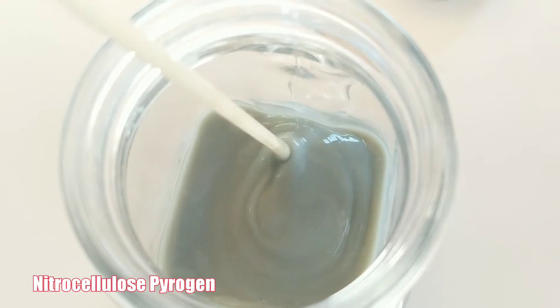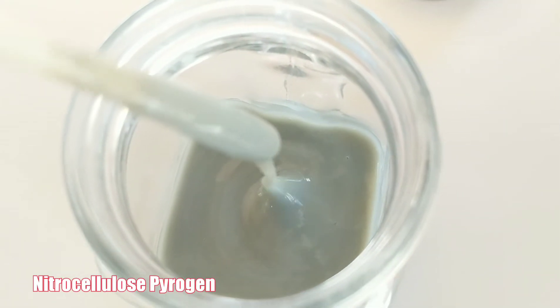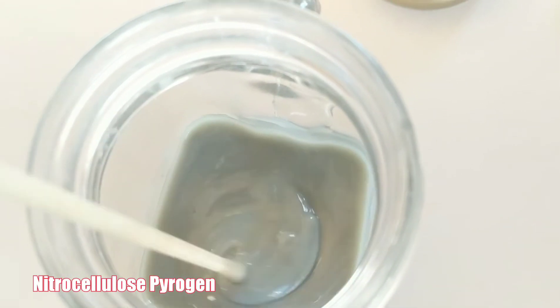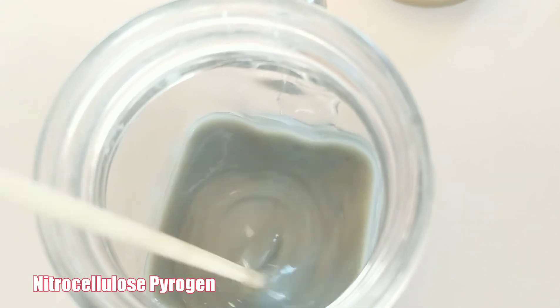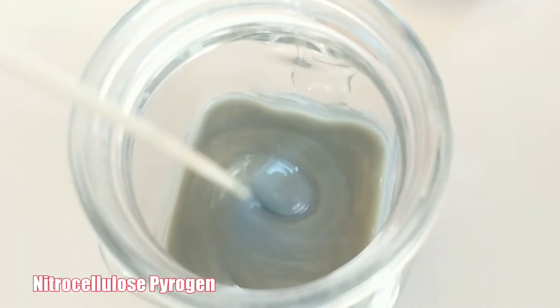If it gets too thick, you can always thin it down with some more acetone. Or if it gets too thin, you just leave the lid off and it'll evaporate.